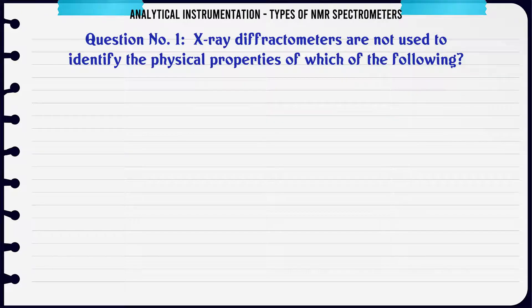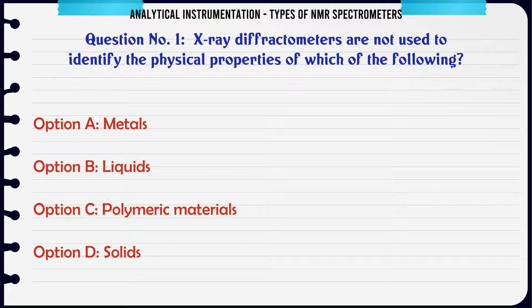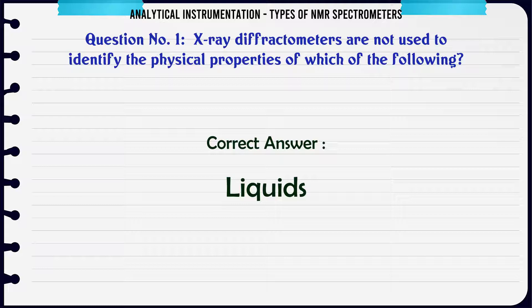X-ray diffractometers are not used to identify the physical properties of which of the following? A. Metals. B. Liquids. C. Polymeric Materials. D. Solids. The correct answer is Liquids.